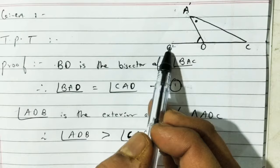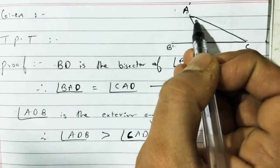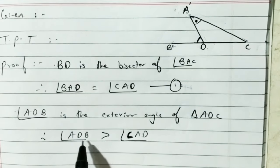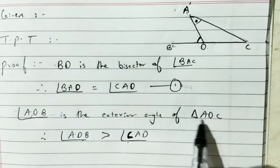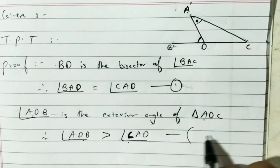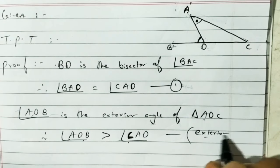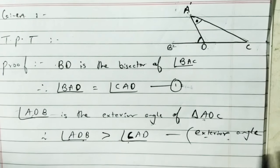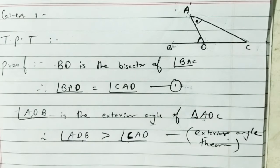Therefore angle ADB is greater than angle CAD. The reason: exterior angle is always greater than the remote interior angle — exterior angle theorem. Write this reason in brackets. Angle ADB is greater than angle CAD.